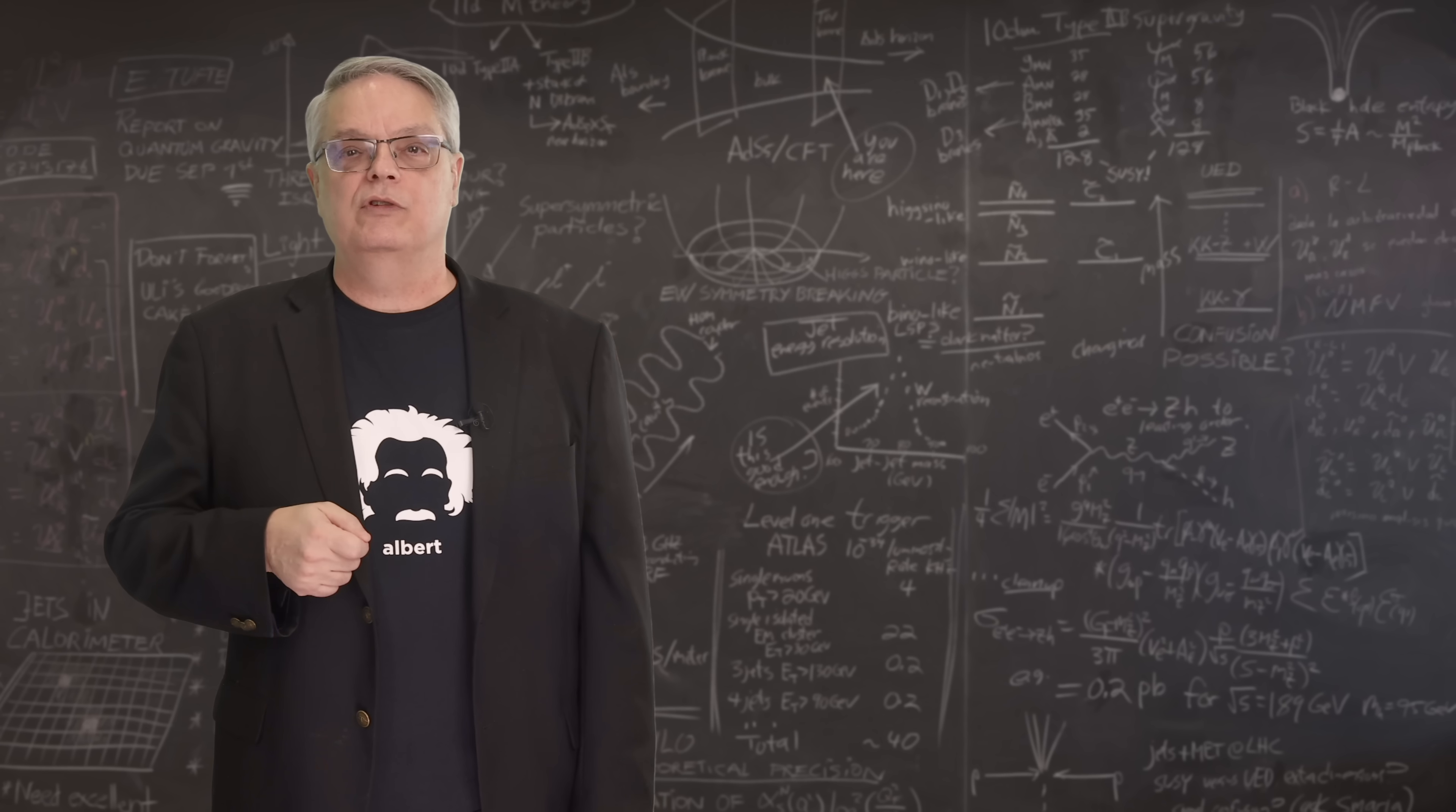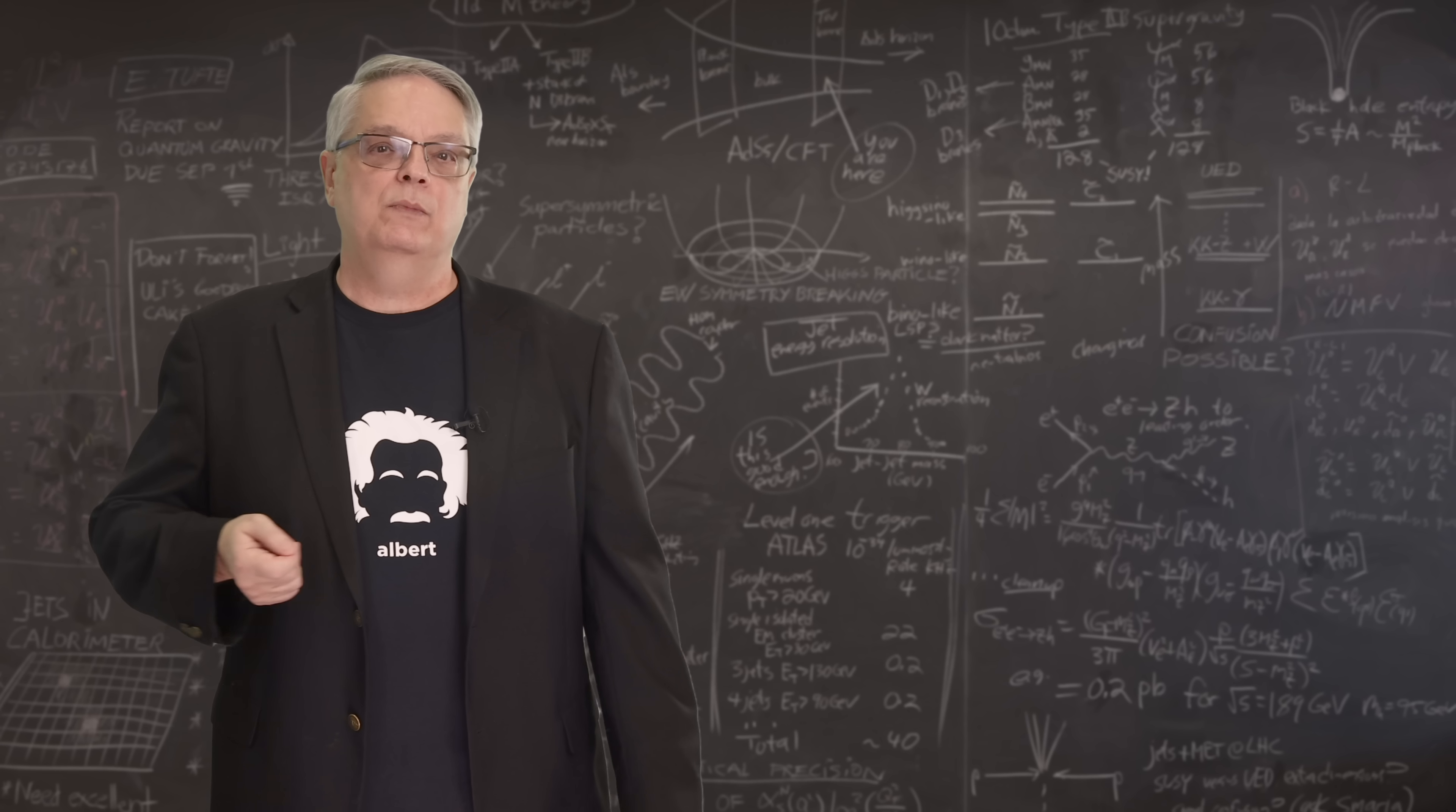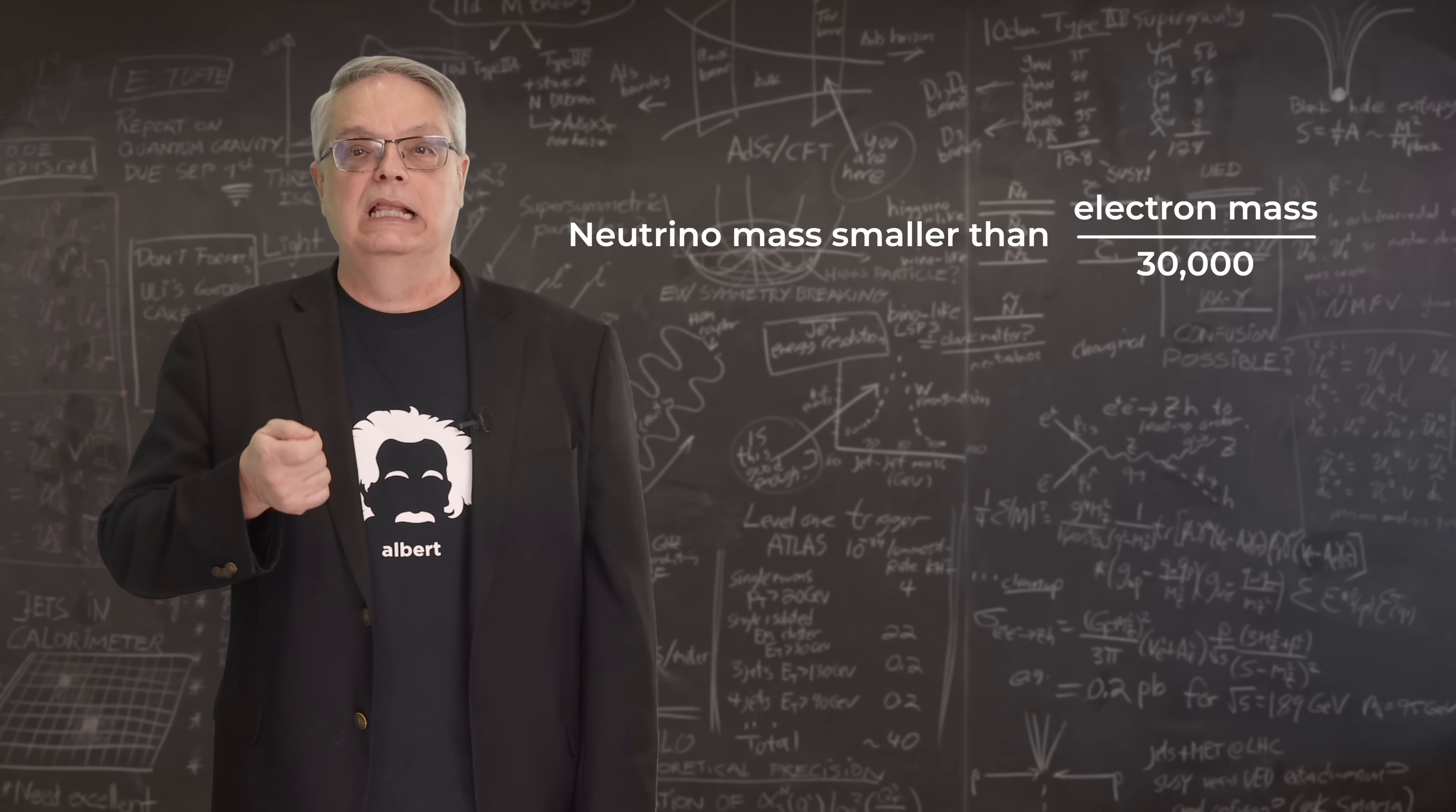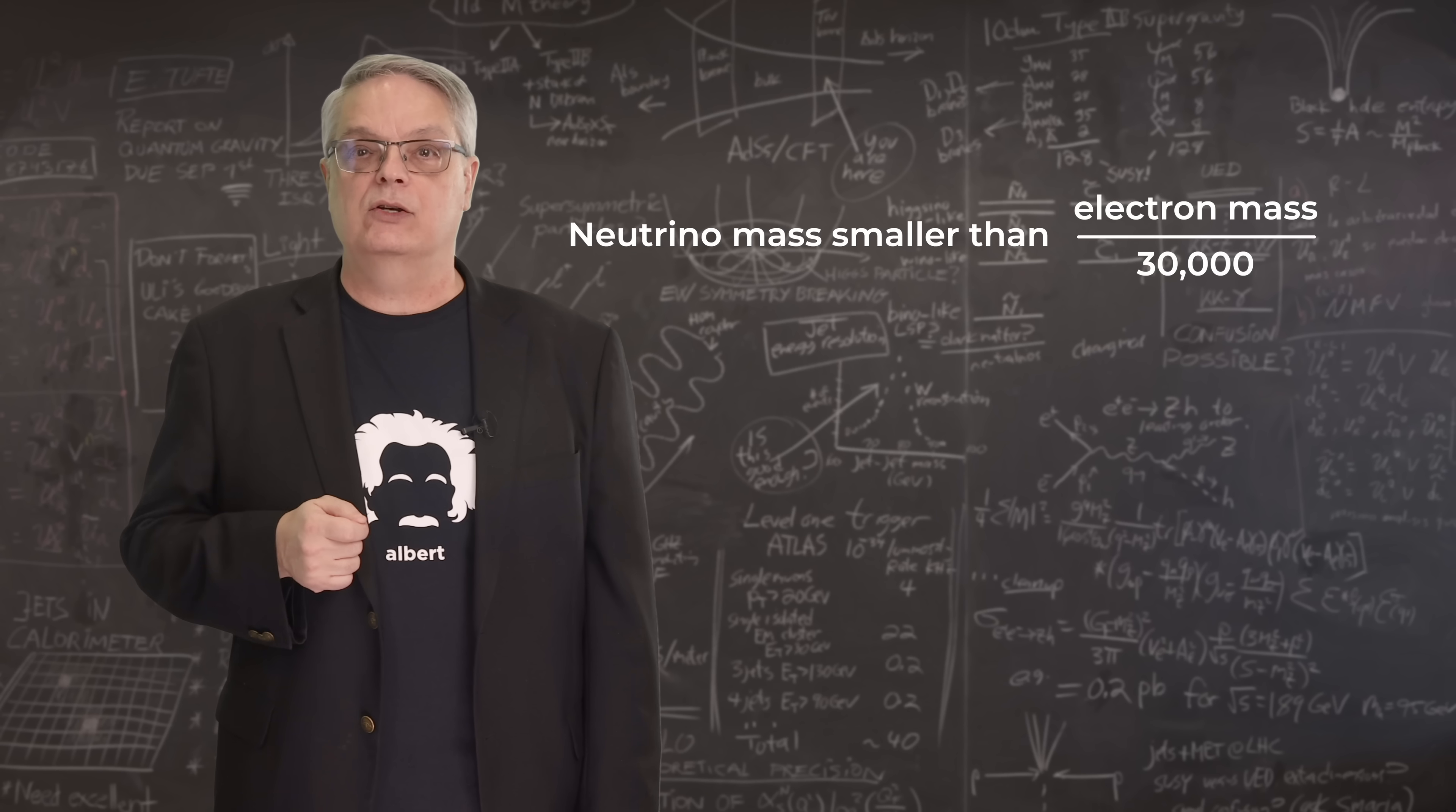And remember, the fact that the neutrinos got here first doesn't mean that they travel faster than light. It just means that the neutrinos escaped the explosion first. While Earth-based experiments give better precision, from this one observation, researchers were able to show that neutrinos have a mass less than one-thirty-thousandth the mass of an electron. This was good stuff.